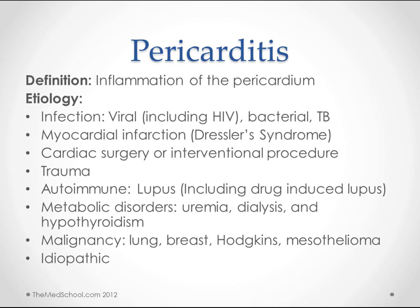Anything in that area — the heart is surrounded by the lungs and the esophagus — could be a potential source of inflammation. Autoimmune diseases like lupus, including drug-induced lupus, are causes, so remember procainamide and others that cause drug-induced lupus. Uremia, dialysis, hypothyroidism, lung and breast cancer, Hodgkin's lymphoma, and mesothelioma are also causes. A lot of these cases are going to be idiopathic.